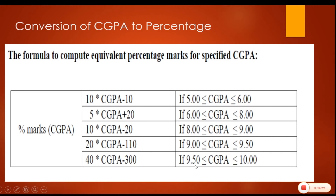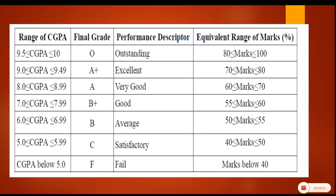If you put 9.5: 9.5 into 40 gives 380, minus 300 gives 80%. And if you put 10: 400 minus 300 gives 100%. This is how the conversion is calculated. This formula is given by the university to convert a student's CGPA into percentage, because when taking admission into a foreign university, percentage marks may sometimes be asked.